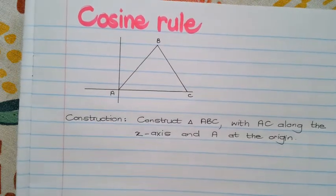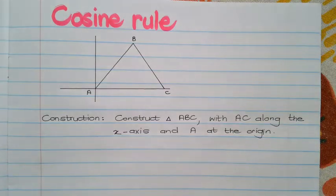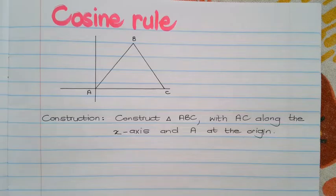Okay, to start the cosine rule, you will also do a construction of triangle ABC with AC along the x-axis and angle A at the origin. So the following that I'm going to do is just to prepare this triangle so that we can prove the cosine rule. I'm going to do it in pencil because I'm going to erase it later.